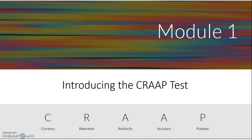Module 1: Introducing the CRAAP Test. Currency, Relevance, Authority, Accuracy, and Purpose.